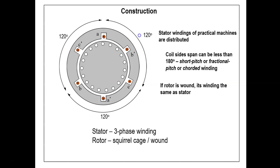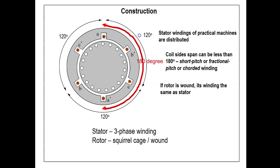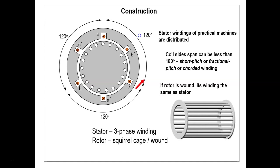In practice, the stator winding is not going to be concentrated as shown in this diagram. Rather, the winding for each pole is distributed into several slots. The angle between coil sides A and A' can be less than 180 degrees — if it is less than 180 degrees, we call it short pitch, fractional pitch, or chorded winding. What is shown here is a squirrel cage type rotor, where the small circles represent bars of conductors embedded in the rotor's surface.